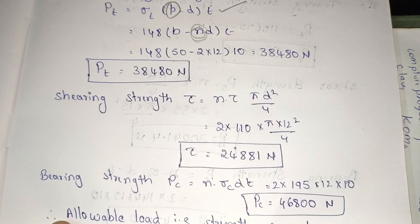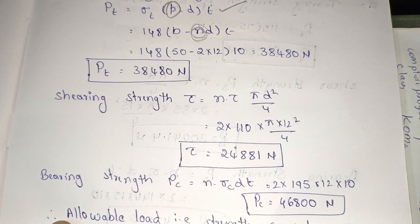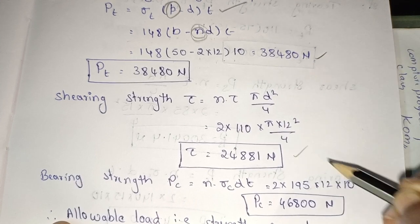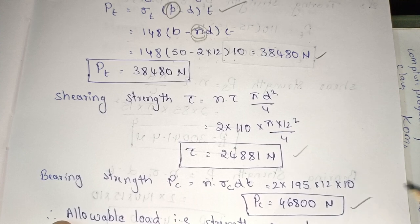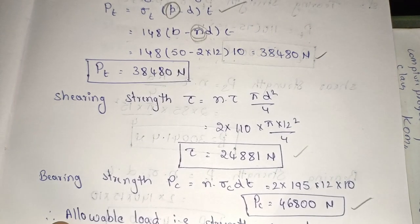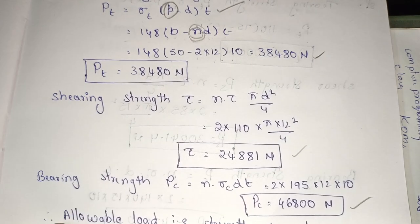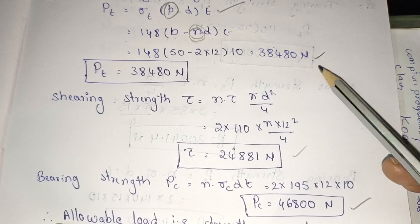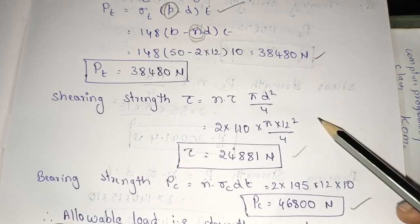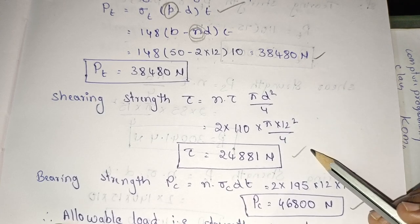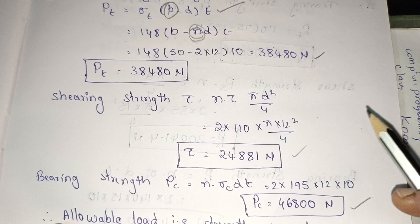Here we are going to find the allowable load. The allowable load is the minimum of the three values: pt, ps, and pc. We take the lowest value among these three.